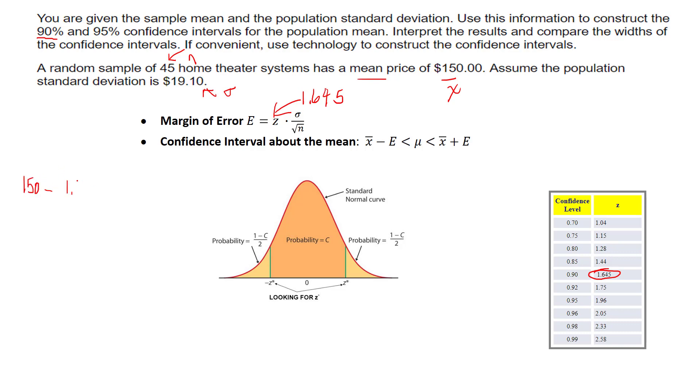If I was doing this manually, I would take my mean 150 minus 1.645 times 1910 over the square root of the sample size, and then the same thing on this side but the plus 1.645 times 1910 over the square root of 45.